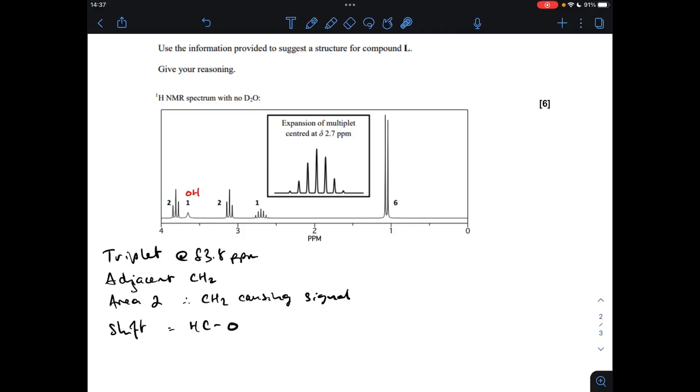Starting with this one, we've got a triplet roughly at delta 3.8 ppm. What does triplet mean? It means there's an adjacent CH2 group. The area of two means it's a CH2 that causes the signal, and from the datasheet the shift value means it's in an H to C to single bond O environment.